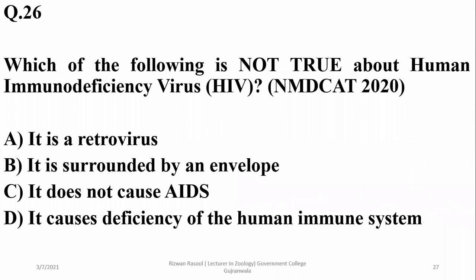Which one of the following is not true about human immunodeficiency virus? HIV is a retrovirus — yes. It is surrounded by an envelope — yes. The statement 'it does not cause AIDS' is a wrong statement. This question was from the NMB care 2020 paper.